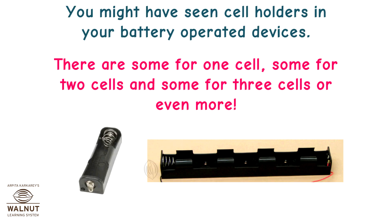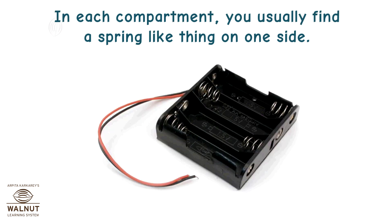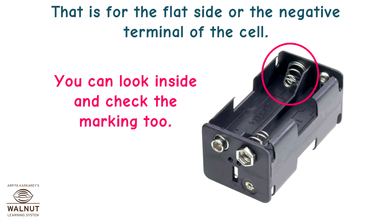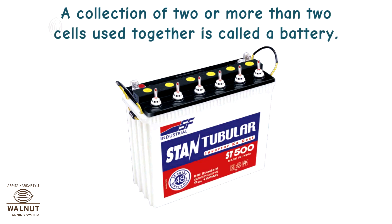You might have seen cell holders in your battery-operated devices — some for one cell, some for two cells, and some for three cells or even more. In each compartment, you usually find a spring-like thing on one side, which is for the flat side or the negative terminal of the cell. You can look inside and check the marking too. A collection of two or more cells used together is called a battery.